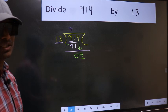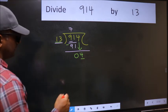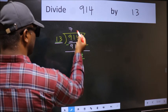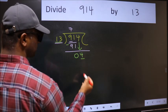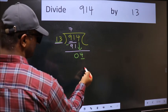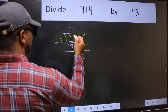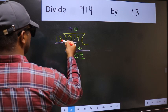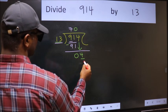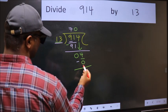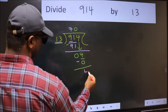Instead, what you should think of doing is which number should we take here. If I take 1, we will get 13. But 13 is larger than 4. So what we should do is we should take 0. So 13 into 0, 0. Now we should subtract 4 minus 0, 4.